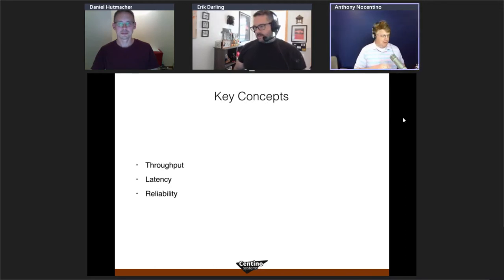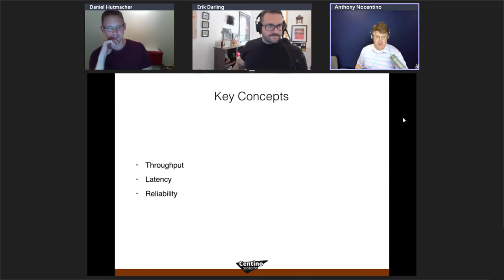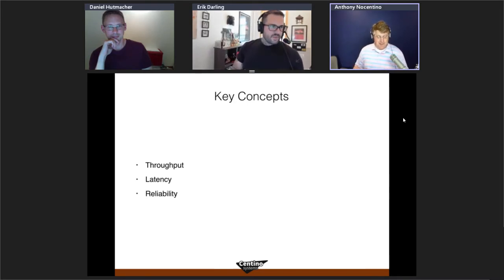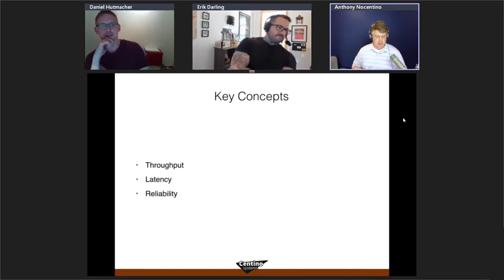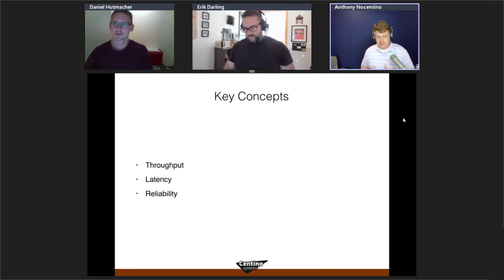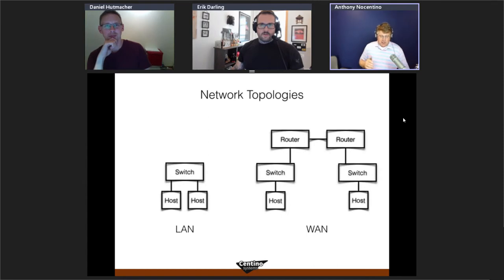The entire presentation centers on three core networking concepts: throughput, latency, and reliability. Throughput is how much data can be moved in a time interval — measured in megabits or gigabits per second. Latency is how long a transmission takes from start to finish. Reliability ensures transmitted messages arrive at their destination. These three things are tightly interrelated.